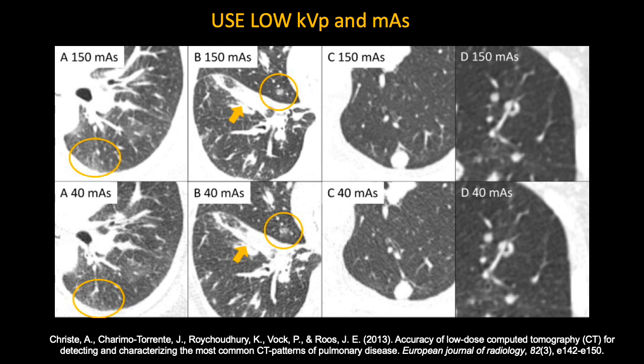Another study carried out in 2013 looked at the accuracy of low KVP and low MAS when examining ground glass opacities. At about 40 MAS to between 150 and 40 MAS, you find that in the central versus peripheral aspects, you still find reasonable amounts of ground glass opacity. However, at lower KVPs, even though you're increasing the skin entrance dose, you're actually seeing greater low contrast resolution. This is the importance of looking at low contrast resolution in CT when detecting ground glass opacities such as in the coronavirus.